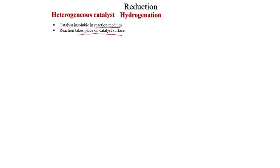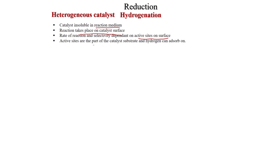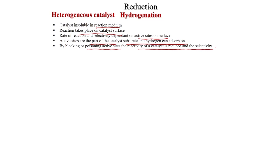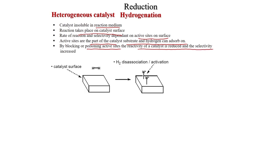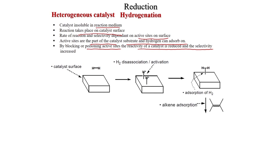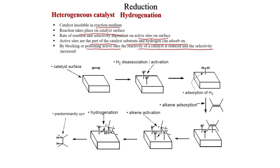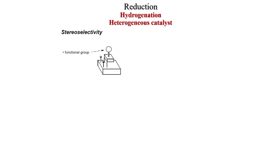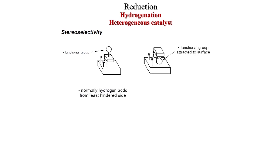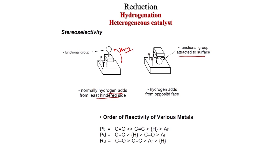Now we will discuss heterogeneous catalysts. In heterogeneous catalysis, the catalyst is insoluble in the reaction medium and the reaction takes place on the catalyst surface. The rate of reaction and selectivity depend on the active sites on the surface. Hydrogen and the substrate can adsorb on the surface. By blocking or poisoning active sites, the reactivity of a catalyst is reduced and the selectivity is increased.